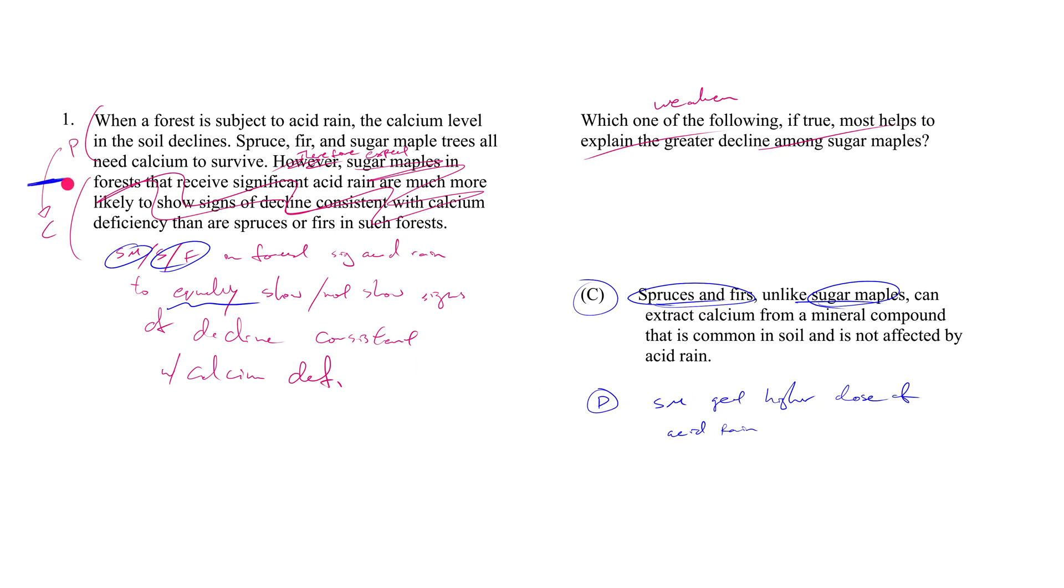So it just does the same thing that C does, which gets in the way of this premise-conclusion space. It turns an assumption on its head—the assumption of uniformity of acid rain falling. Okay, good. So hopefully you're starting to see how we can turn RRE questions into weakening questions.